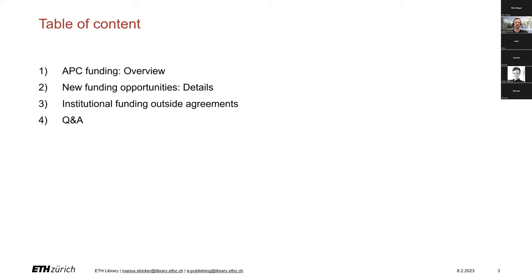After a brief overview of open access funding, we are going to have a closer look at the details for our newly agreed institutional funding options. Of course, there is still APC funding outside of these so-called transformative agreements, but this only refers to gold open access and I will show you how to apply for it as well. After the presentation, there should be enough time for asking questions.